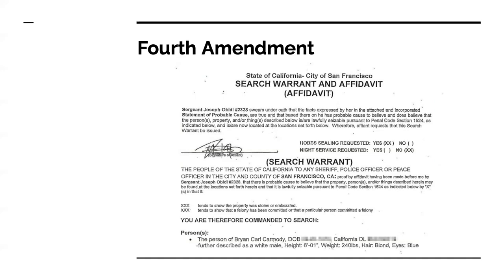There are a few other terms to be familiar with for this amendment. There's the exclusionary rule: evidence seized and examined without a warrant or in violation of an individual's rights will often be inadmissible as evidence. There is the fruit of the poisonous tree — a metaphorical expression to describe evidence that was initially acquired illegally. All evidence subsequently gathered from that initial search becomes inadmissible.